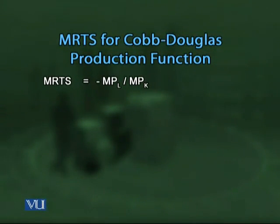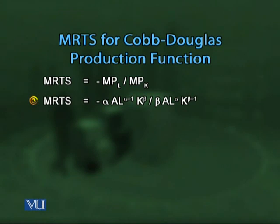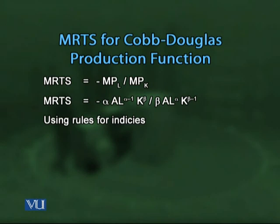The marginal rate of technical substitution (MRTS) for the Cobb-Douglas production function equals the absolute slope of the isoquant, which is the ratio of marginal product of labor to marginal product of capital. Substituting the calculated marginal products — α·A·L^(α−1)·K^β divided by β·A·L^α·K^(β−1) — and applying index rules, we get MRTS = −(α/β)·(K/L).